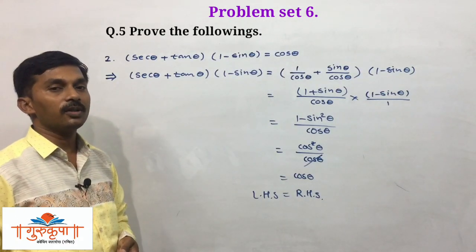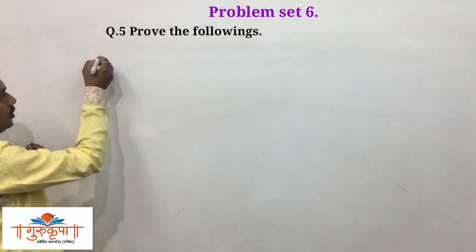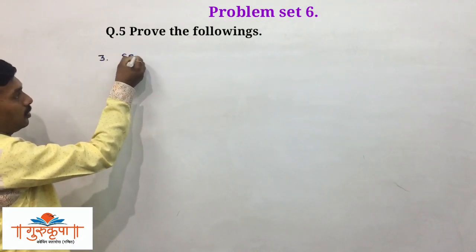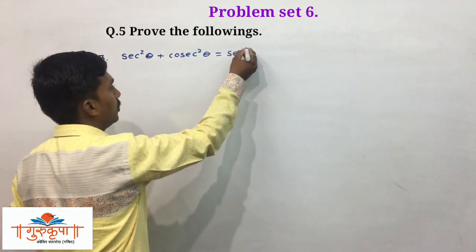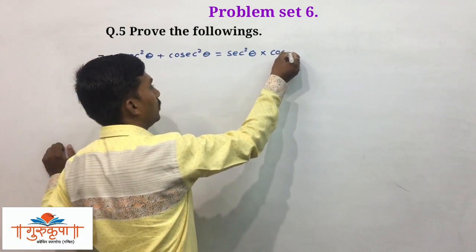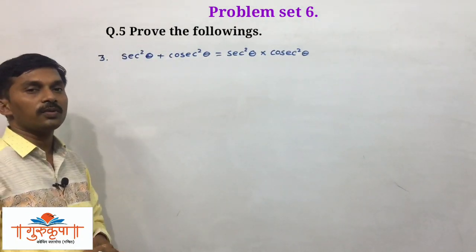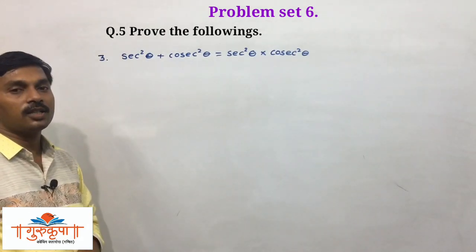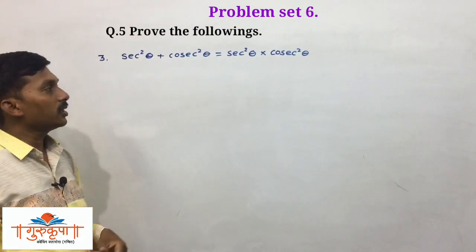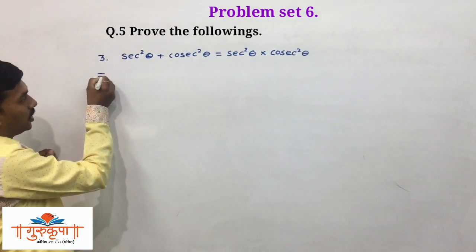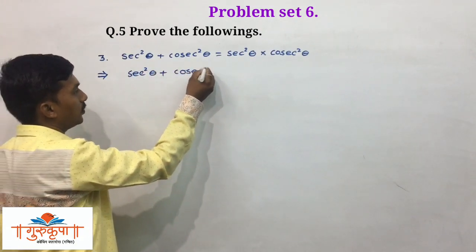We will take the next example — example number 3, from question number 5. The expression is: sec squared theta plus cosec squared theta equals sec squared theta times cosec squared theta. We have to prove LHS equals RHS. We will first write LHS as it is: sec squared theta plus cosec squared theta. Here we want to use identities, but we need the same ratios on both sides.